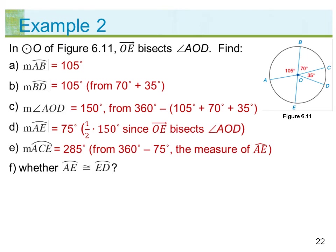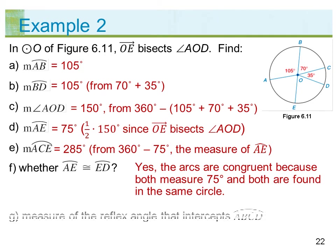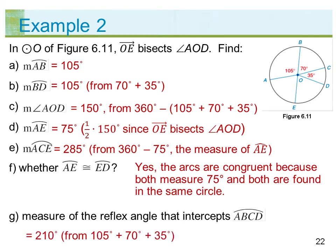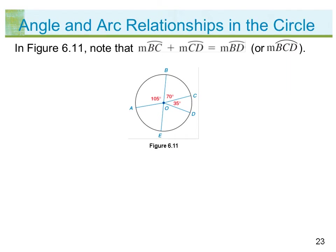F) Whether arc AE is congruent to arc ED: yes, the arcs are congruent because both measure 75 degrees and both are found in the same circle. G) Measure of the reflex angle that intercepts arc ABCD: 210 degrees, from 105 plus 70 plus 35 degrees.